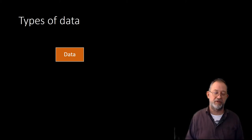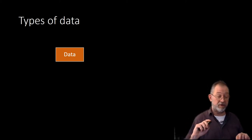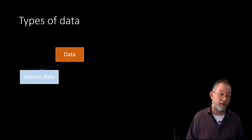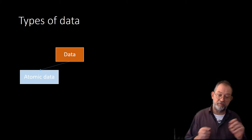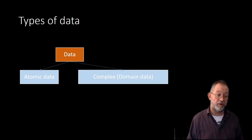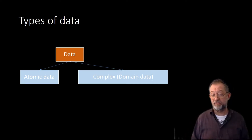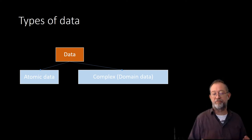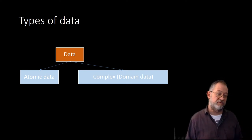Now let's look at different types of data. We distinguish between atomic data — think of it as unbreakable, data considered as one element — and then complex or unstructured data, which includes photographs, geographic data, and things in that area.